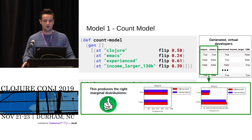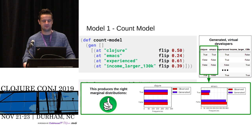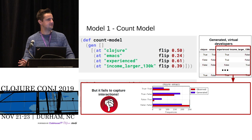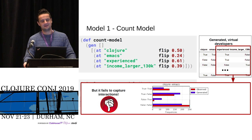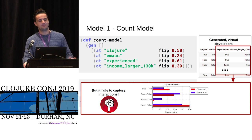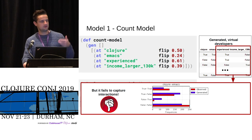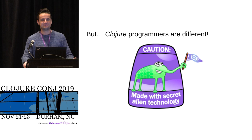But is this a good model? On first glance it doesn't look bad — we get the fractions right for Clojure and Emacs. But this model doesn't know anything about interactions in the data. It doesn't know that the data suggests if you know Clojure, you're more likely to know Emacs. So distributions about interactions start to get bad. This is logical because there's no concept in the program that links the random choice called Clojure to the random choice called Emacs.